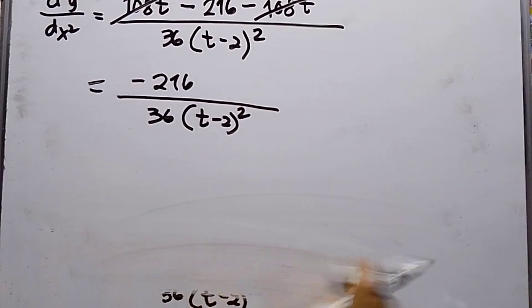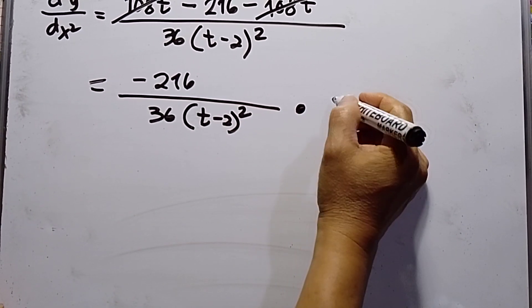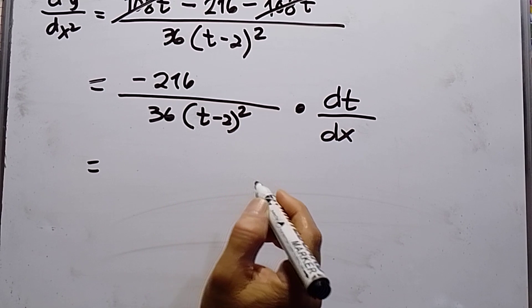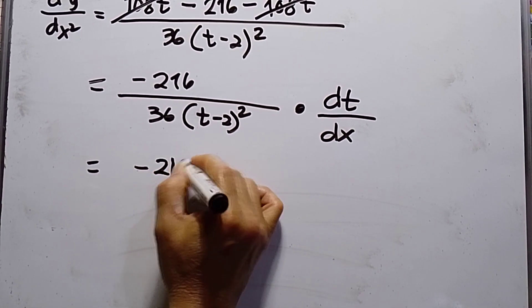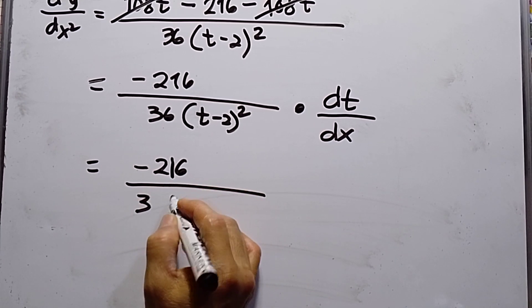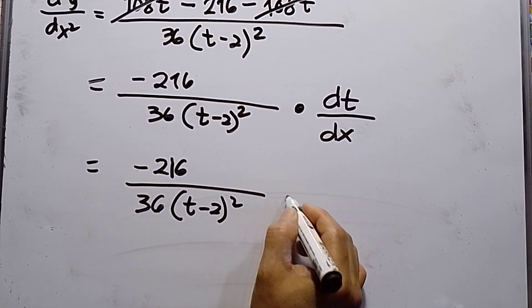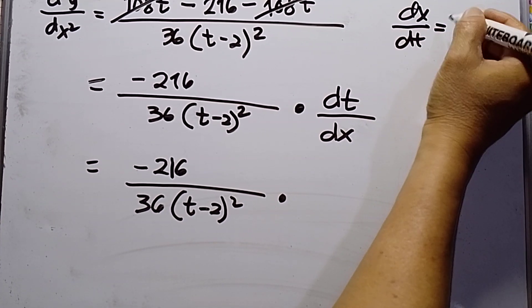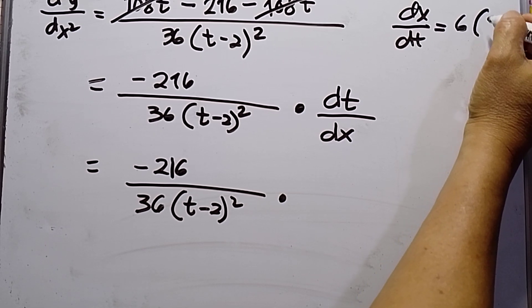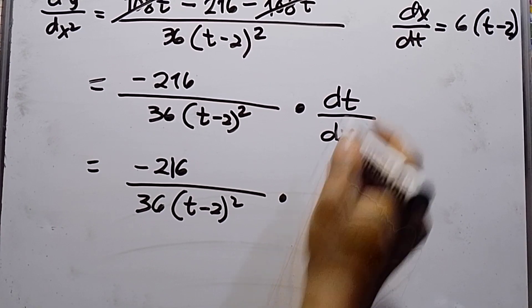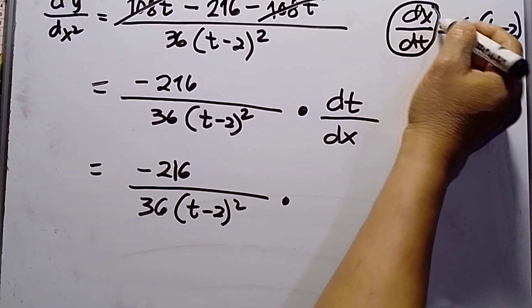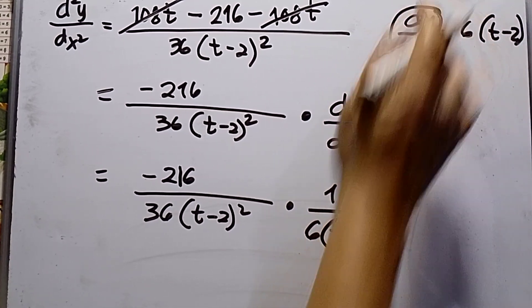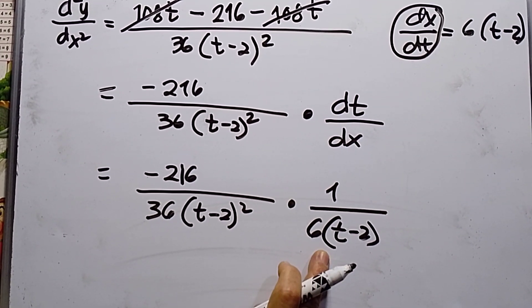Take note: I need to multiply this by dt over dx. Recalling that dx over dt equals 6(t minus 2), the reciprocal dt over dx is 1 over 6(t minus 2). So multiplying: negative 216 over 36(t minus 2) squared, times 1 over 6(t minus 2). Since 36 times 6 equals 216, the 216s cancel.